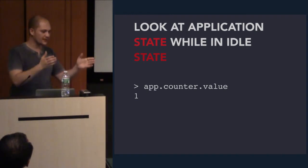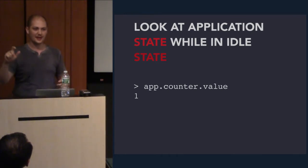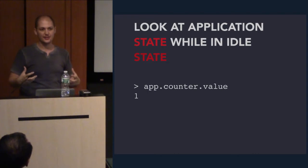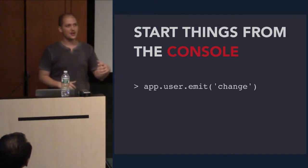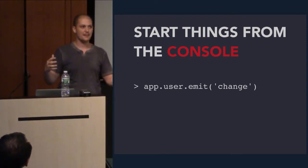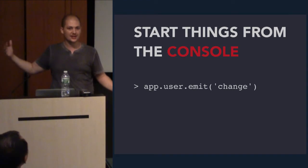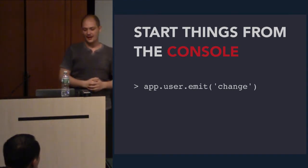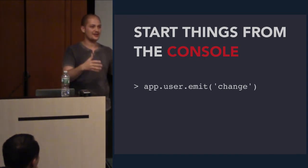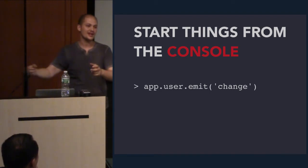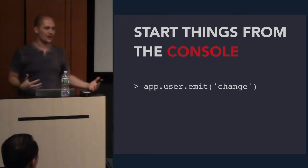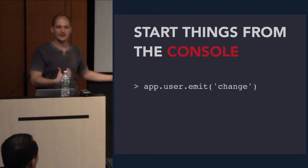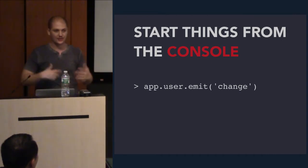If the state is hidden behind a closure, you can't do that unless you're inside a breakpoint. Another important thing is to be able to trigger things from the console. Say you have a user model that updates every time it's changed from the server — another user on a different machine changed it, you send an event from the server, and it re-renders. Normally to debug that, you'd have to log in using a different machine and invoke a change event. But why not just have your user model accessible from the console so you can emit changes directly and test your code?